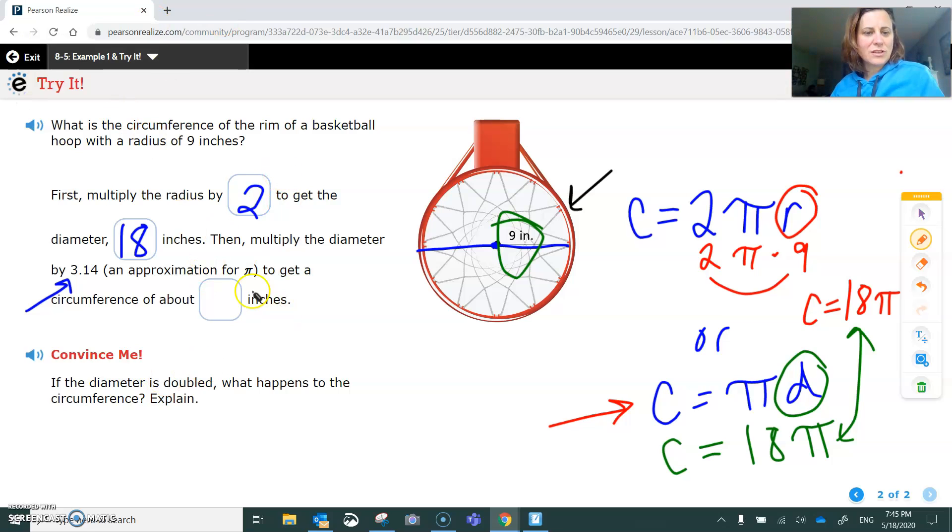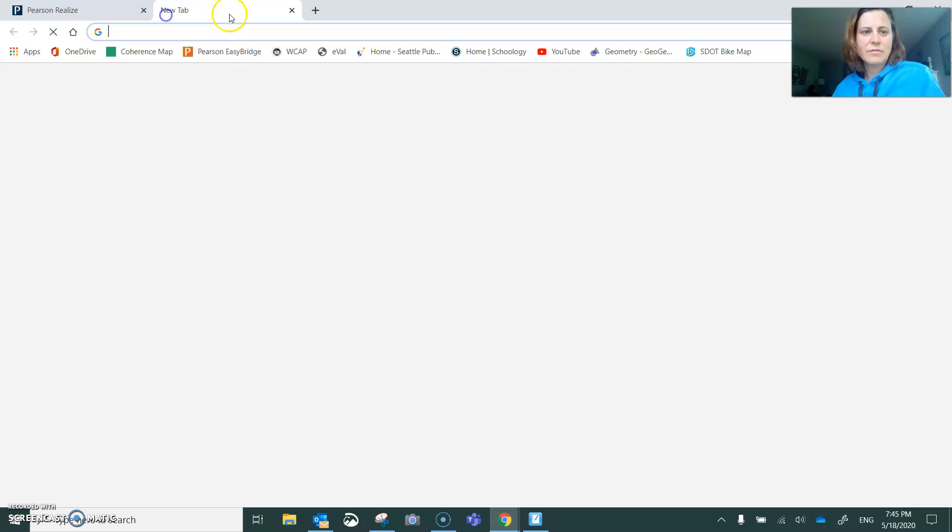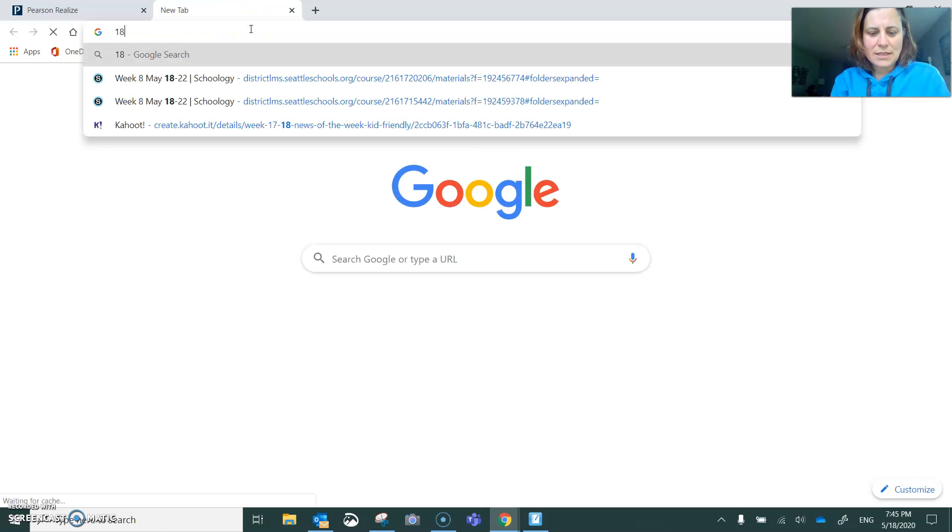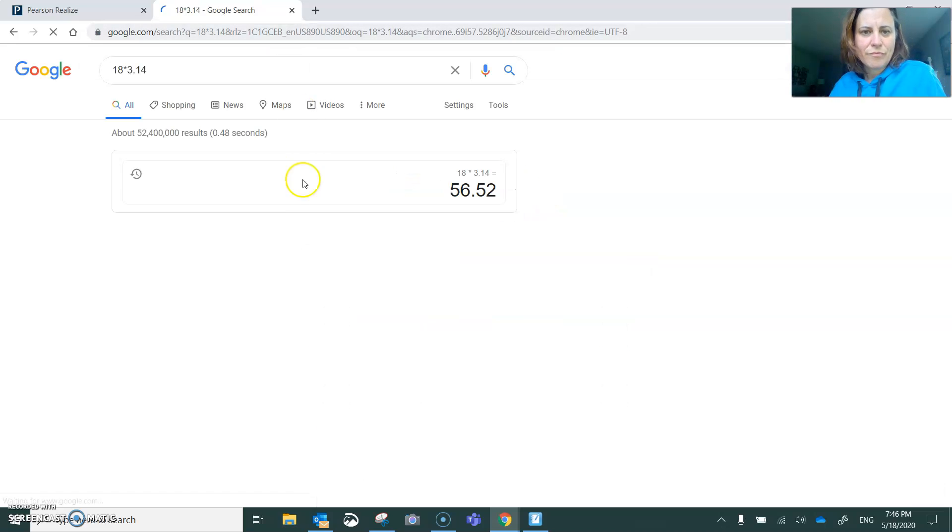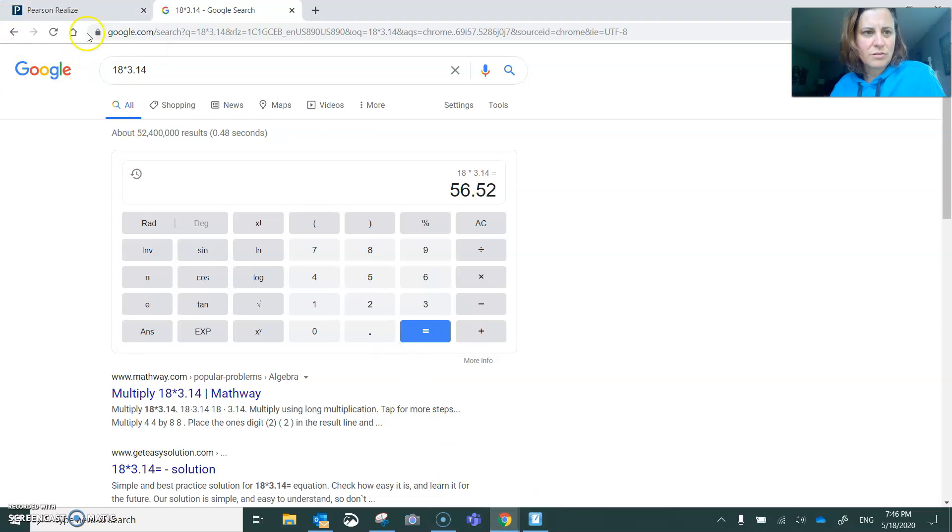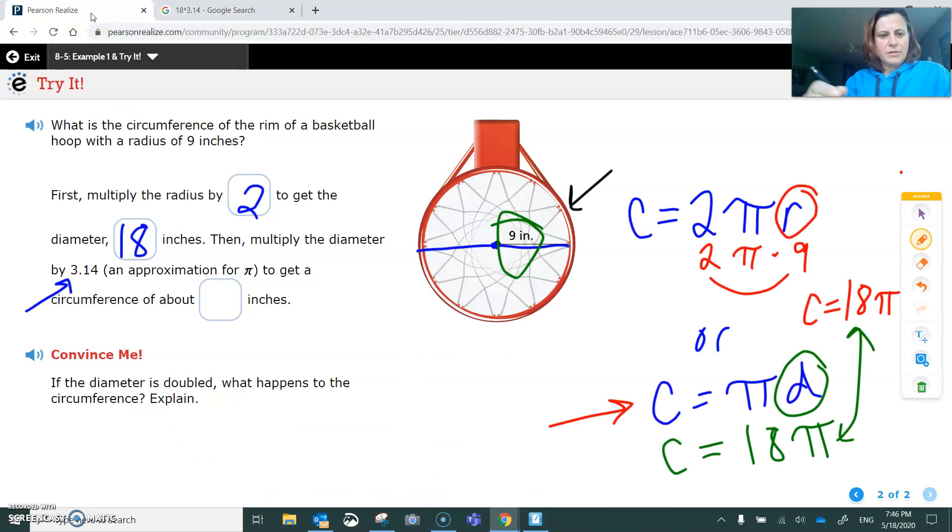They told us they want us to use 3.14. So if we type 18 times π in the calculator, 56.52, so it is 56.52 inches. I'm not sure, did they ask us to round it in any way? They did not.